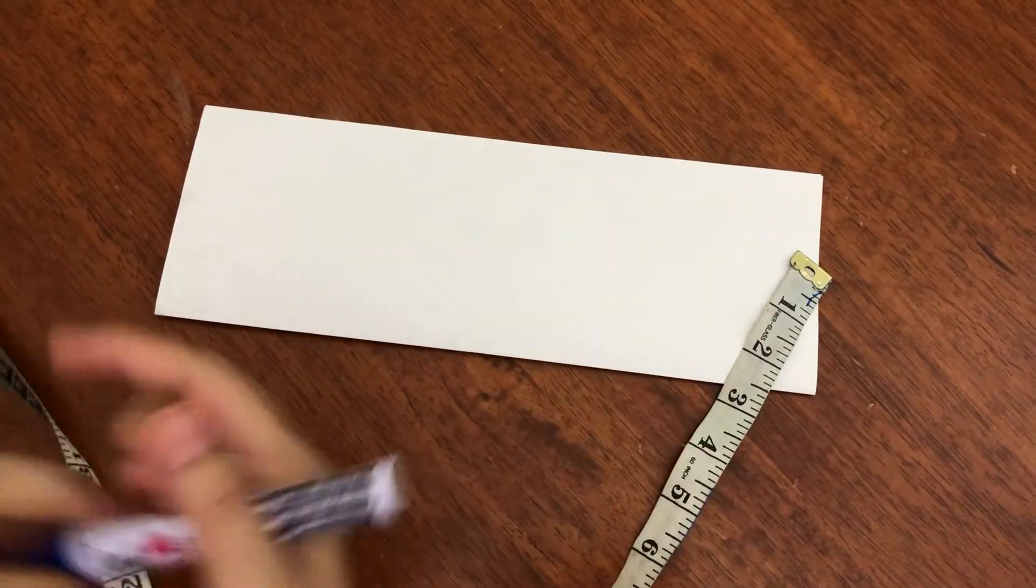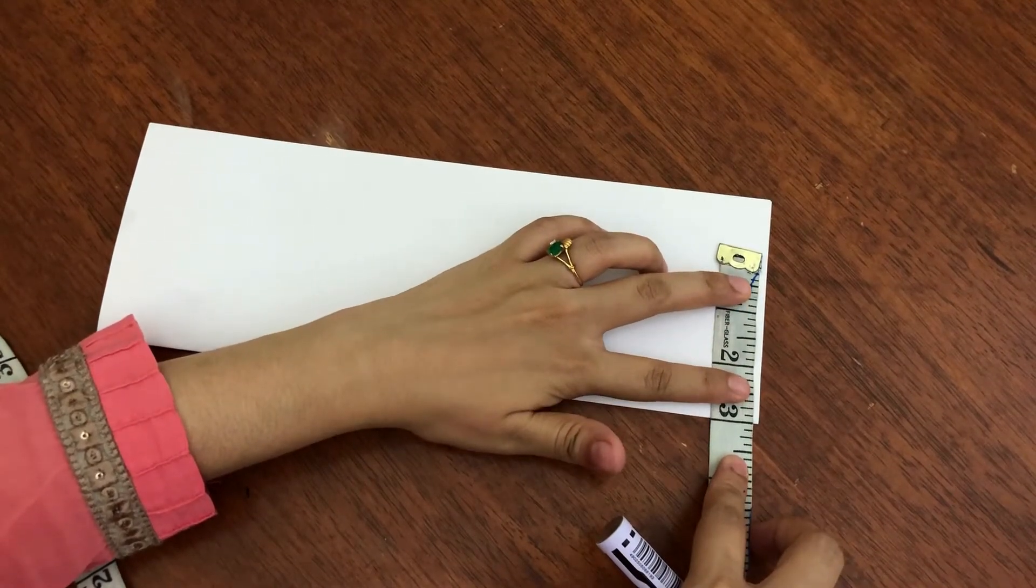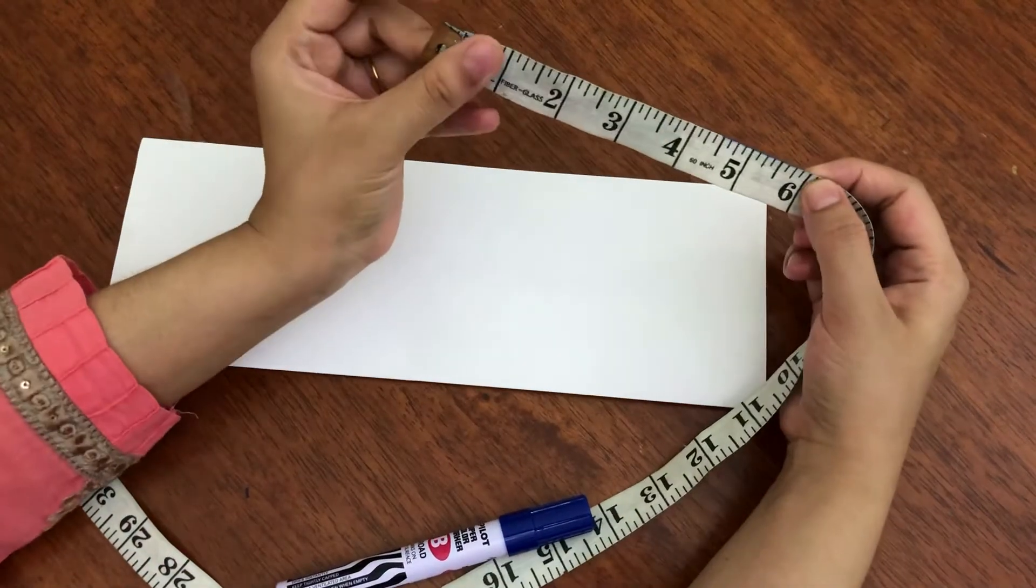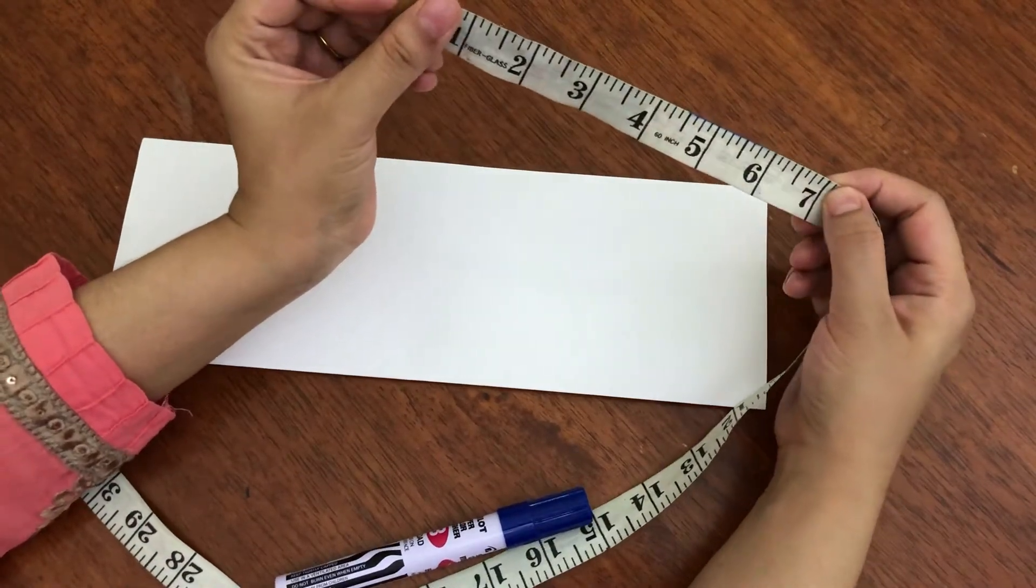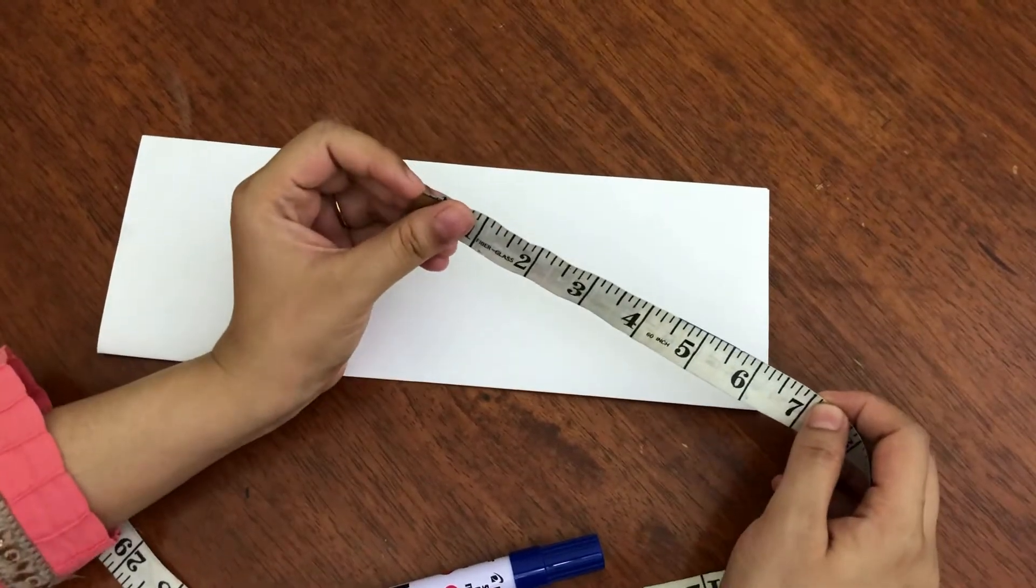From here we will see the broadness of the neck. Some people wear 6 inches broad, some people wear 7 inches broad. It is totally up to you how much broad you want to wear.